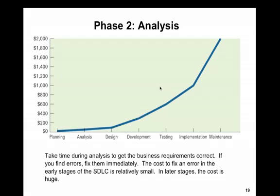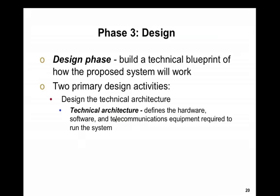What we're looking at is the dollar value — it takes time during analysis to get the business requirements correct. If you find errors, you can fix them immediately in the analysis stage. The cost to fix an error in earlier stages is very small; in later stages, it's huge. This graph shows that if you find an error in implementation or maintenance, it costs more money to fix. People take shortcuts in planning and analysis, thinking 'how much analysis do we really need to do?' and start right at the design phase — which is the starting point of all the failures.